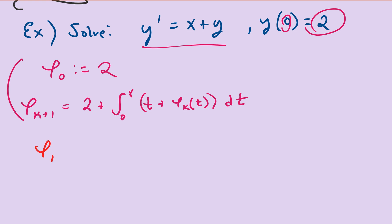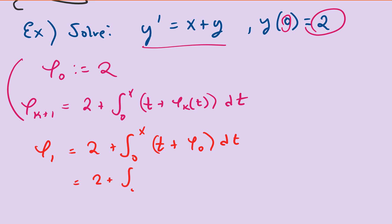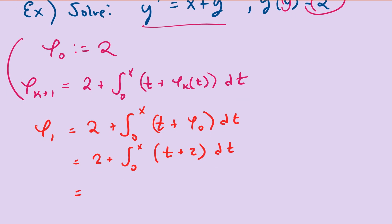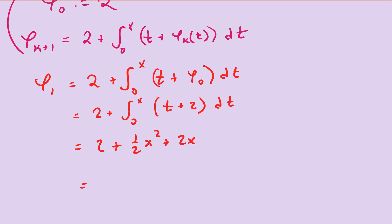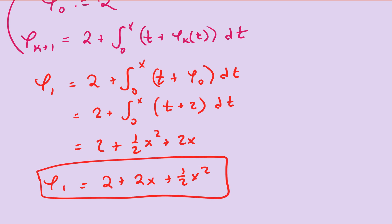φ₁ equals 2 plus the integral from 0 to x of t plus φ₀. Since φ₀ equals 2, that's the integral from 0 to x of t plus 2, which gives 2 plus one-half x squared plus 2x. After rearranging, φ₁ equals 2 plus 2x plus one-half x squared.